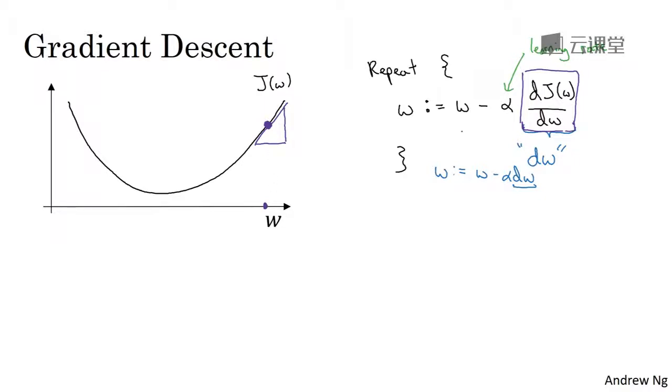w gets updated as w minus a learning rate times the derivative. The derivative is positive. And so you end up subtracting from w. So you end up taking a step to the left. And so gradient descent would make your algorithm slowly decrease the parameter if you had started off with this large value of w.